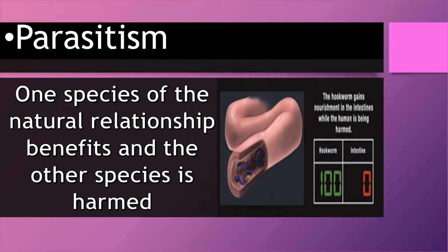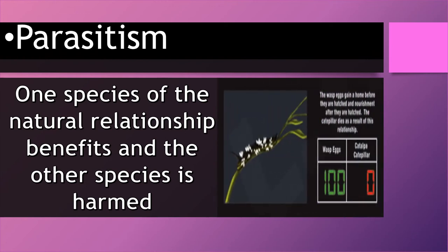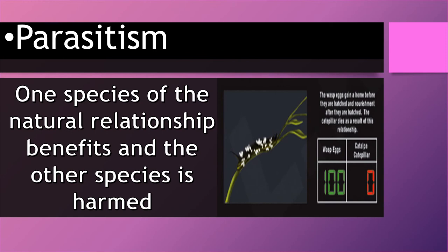There are some cases though where it will. What you're seeing here is actually a caterpillar — typically black, but the white things on it are wasp eggs. The wasp eggs gain a home before they hatch, and after hatching they feed on the caterpillar while it's still alive. The caterpillar does die as a result, so the wasp eggs get all the benefit and the caterpillar gets none.